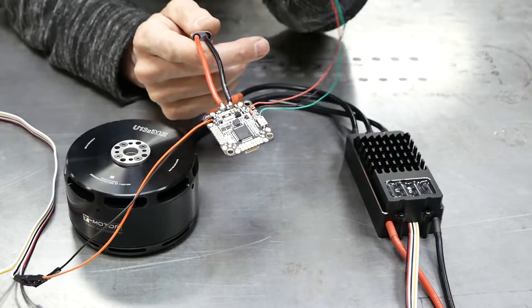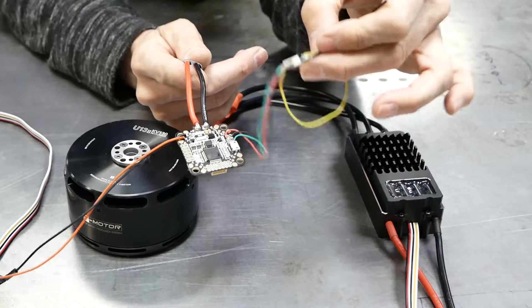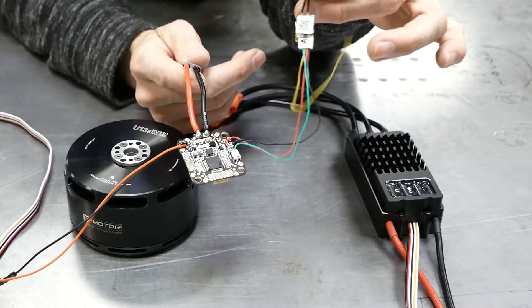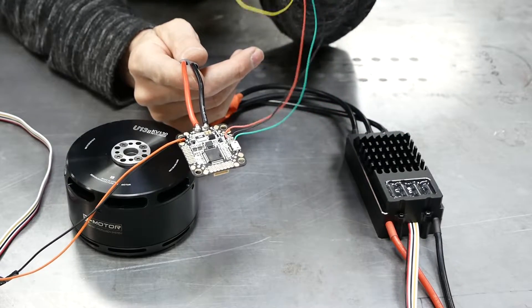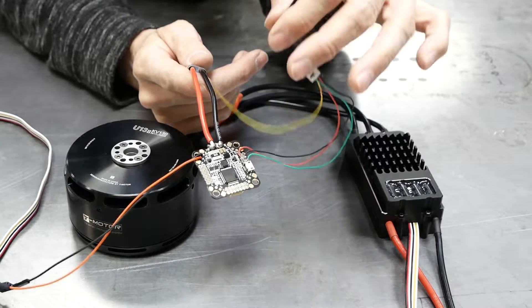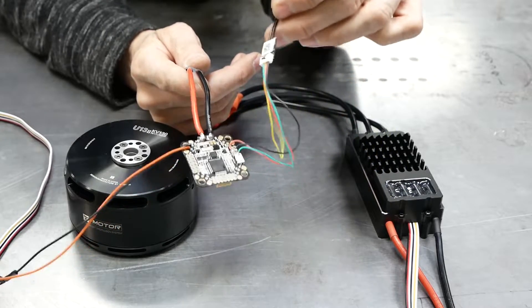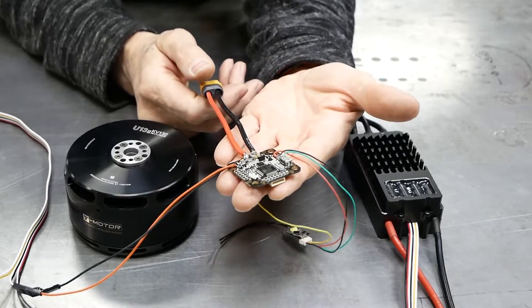So the way to test that was I had to hook up a receiver. So this is an XSR, same one we use on the mini quads, get this thing going and get the transmitter out, bind it to this.